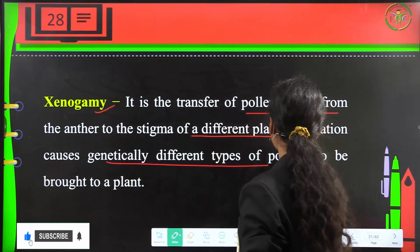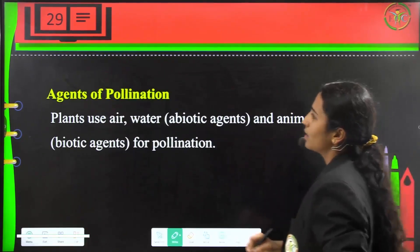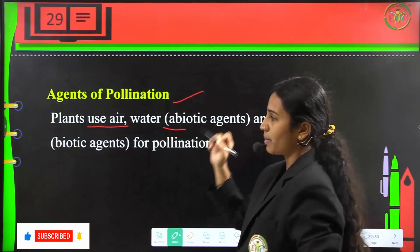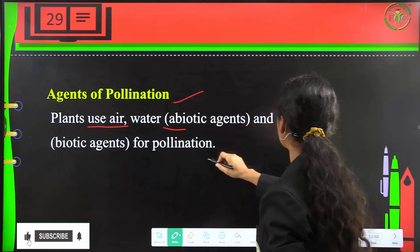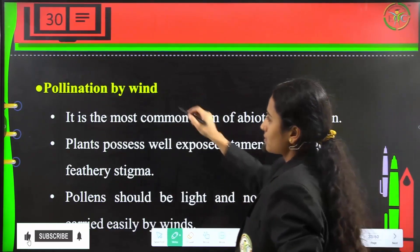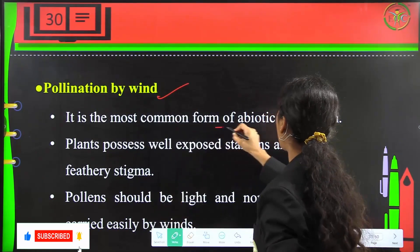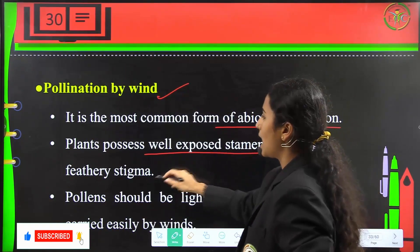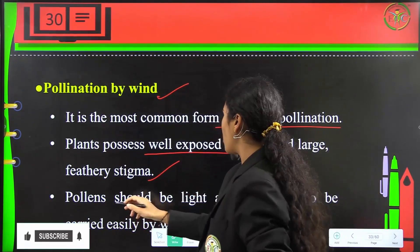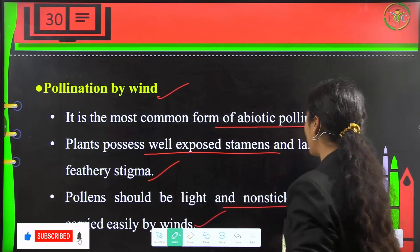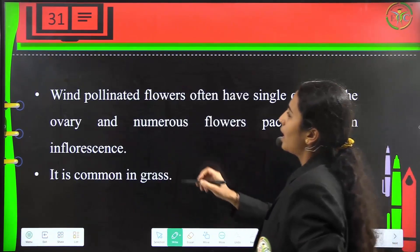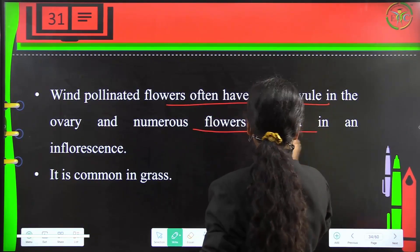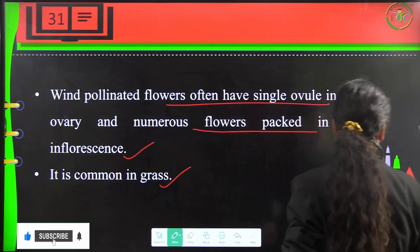Xenogamy causes genetically different types of pollen to be brought to a plant. Agents of pollination are abiotic agents such as air and water, and biotic agents such as animals. Pollination by wind is the most common form of abiotic pollination, and the plant possesses well-exposed stamens and large feathery stigma. Pollen should be light and non-sticky to be carried easily by winds. Wind-pollinated flowers often have a single ovule in the ovary and numerous flowers in an inflorescence, very common in grasses.